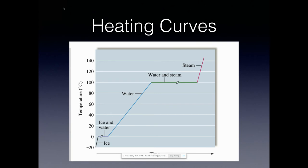Once all the ice has melted, the temperature can actually start to rise. The highest temperature you can bring liquid water to is 100°C; once you hit that temperature it starts boiling, assuming one atmosphere of pressure. After it has all boiled away, the temperature of the steam can continue to rise, but not the temperature of the liquid-gas mixture.